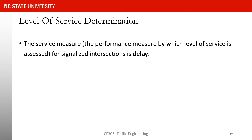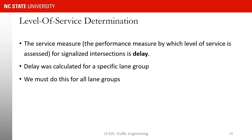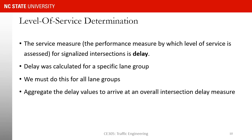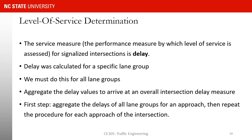Now we want to determine the level of service. The service measure that we use for level of service determination at a signalized intersection is delay. So we need to find delay for each lane group, and based on that we find the level of service for each lane group. We aggregate those across one approach to find the control delay on an approach, and based on that we find the level of service for the approach. We do the same to find the level of service for the intersection.